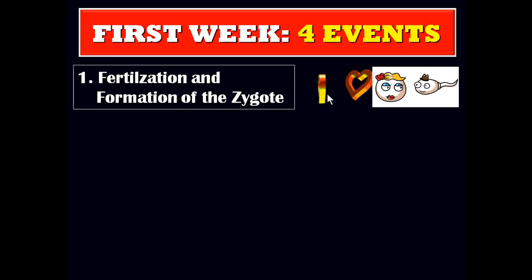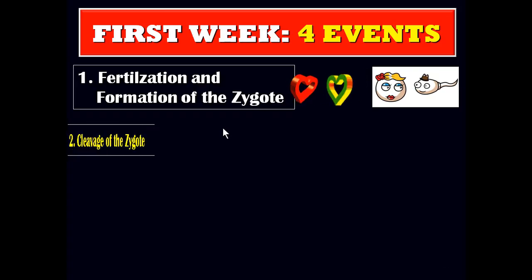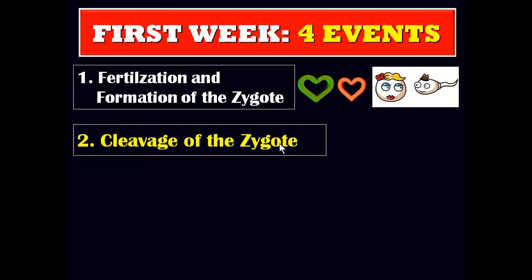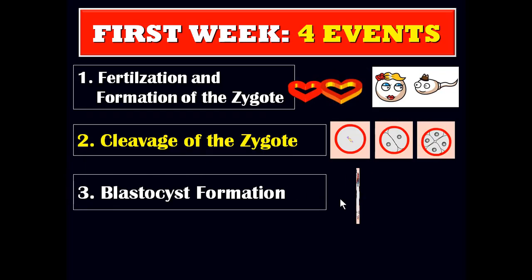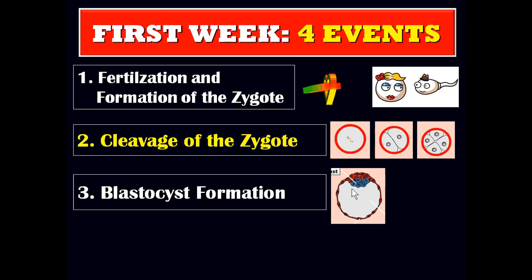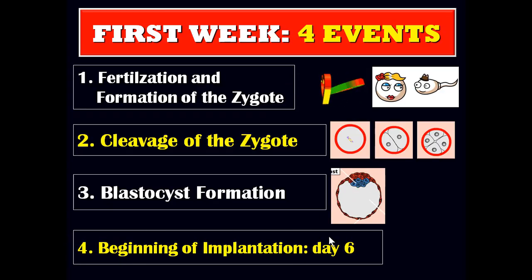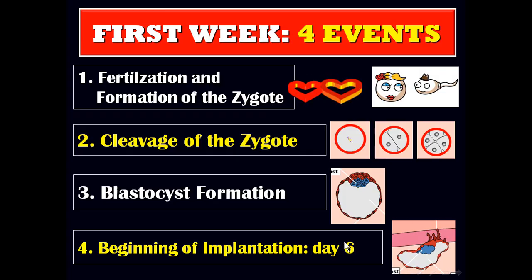The first week is characterized by four events. The first event is fertilization and formation of the zygote. After formation of the zygote, cleavage or division of the zygote to form a large number of cells, then formation of the blastocyst, and then beginning of implantation of the blastocyst on day 6.